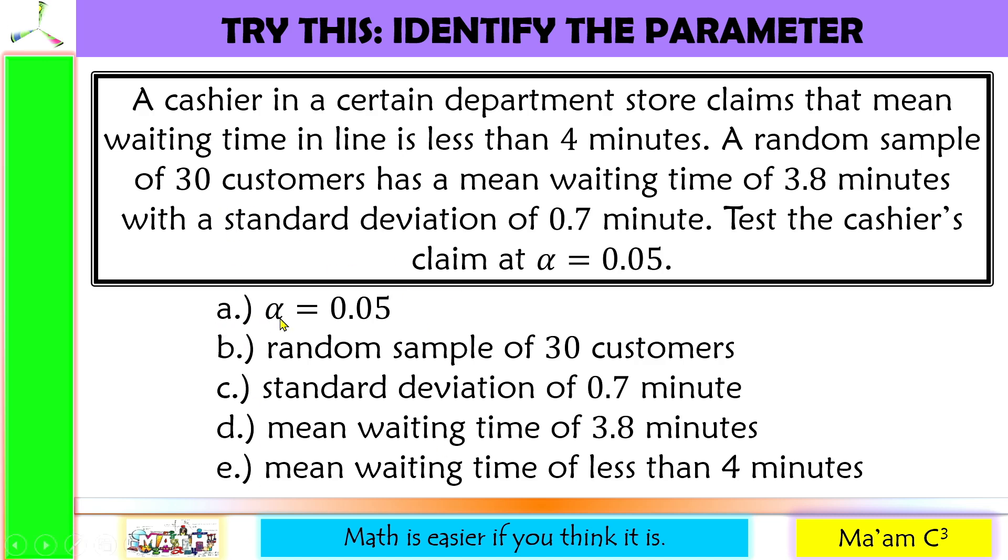We have a lot of information here. Letter A, level of significance, alpha, which is equal to 0.05. Definitely this is not parameter. Letter B, random sample of 30 customers. It's already written here, random sample. So this is the sample size, not a parameter.